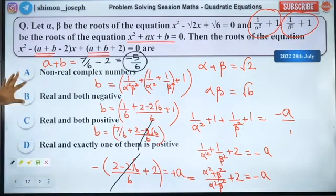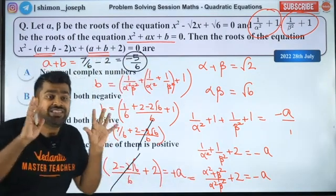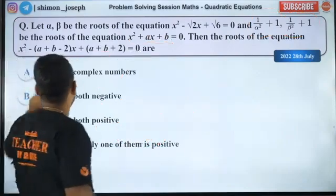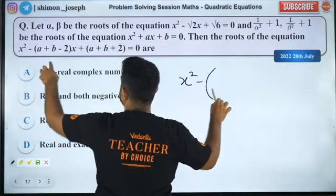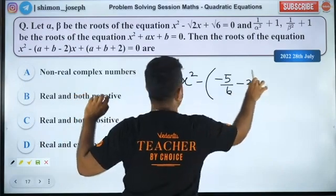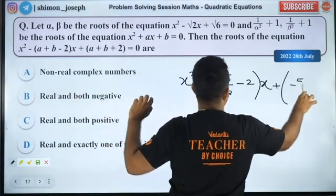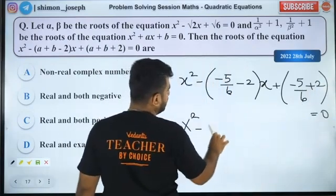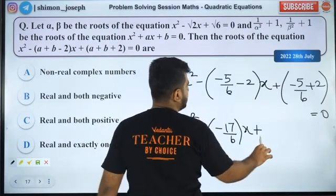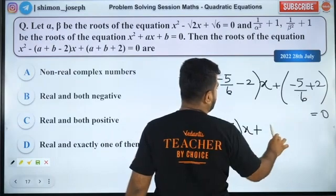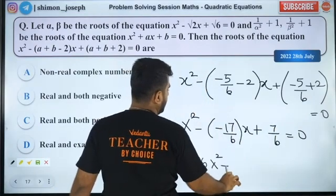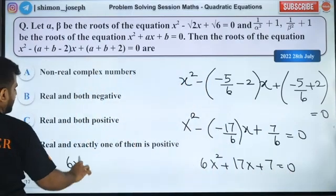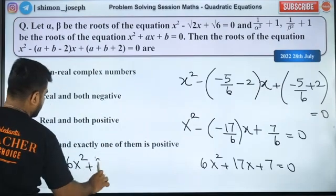So this A plus B, you have to get out of the case. Now x² minus (-17 by 6) into x plus (-5 plus 12), 7 by 6 equal to 0. So 6x² plus 17x plus 7 equal to 0. So this is what we have to factorize. Split the middle term and solve.